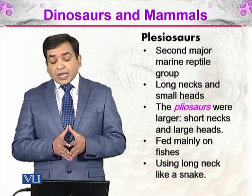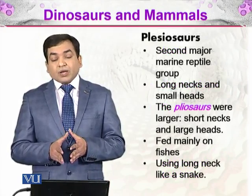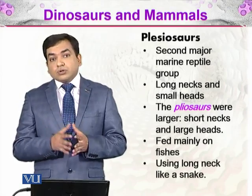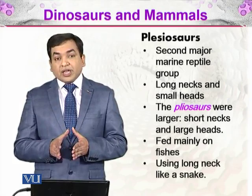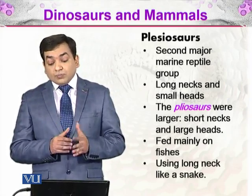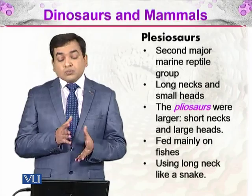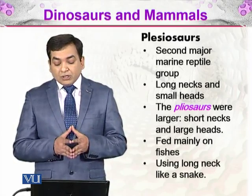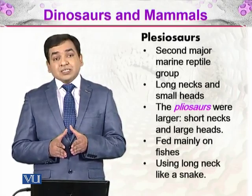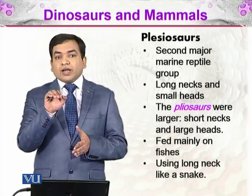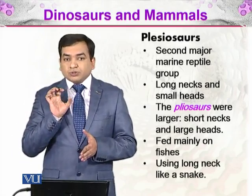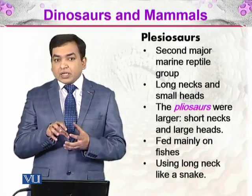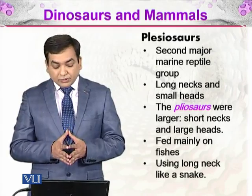There is a second major marine group of reptiles, which is plesiosaurs. They had a long neck and small head. One of those groups, the pliosaurs, were larger and had a shorter neck and large head. The long-necked plesiosaurs fed mainly on fishes using their long neck like a snake — just as a snake captures its prey very quickly, that is what they did with their long necks.